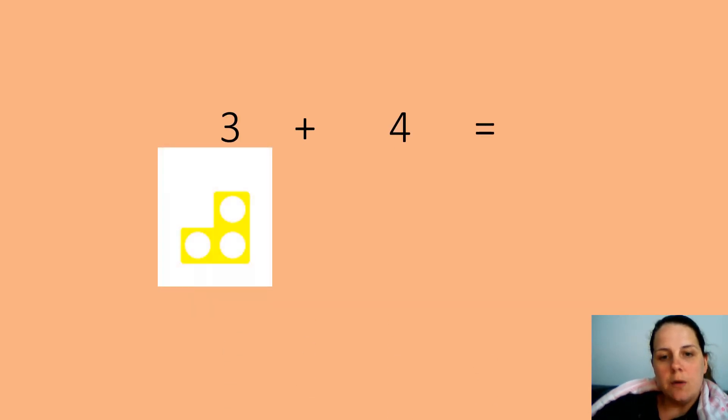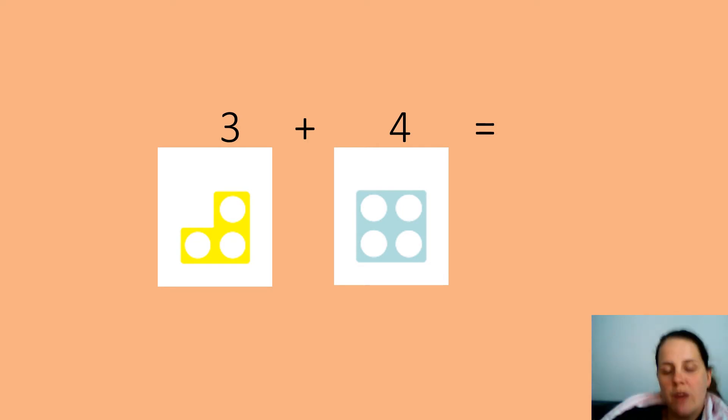3 add 4 equals. Here's a Numicon to help you if you need to count them. If you need to, pause the video. I will put the answer up in a minute, but I want you to try and work it out yourself before the answer comes up. Remember, you can count the circles in the Numicon to get your answer.